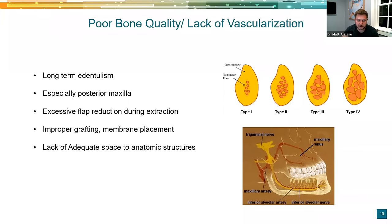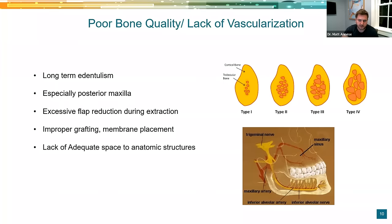Lack of adequate bone height due to anatomic structures is another factor — the maxillary sinus, nasal floor, inferior alveolar nerve, mental nerve all come into play. In the maxilla you can augment with sinus lifts, lateral windows, and crestal lifts. In the mandible it gets trickier — I personally don't do nerve repositioning or large block grafting, and short bone height in the posterior mandible makes it harder to manage stress on implants.